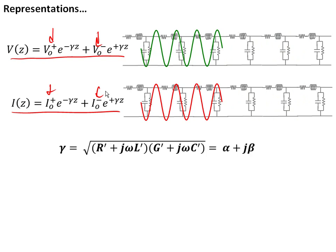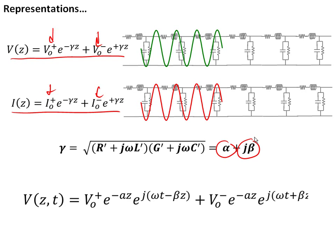And the propagation coefficient is a complex number, it's gamma, and it has a loss alpha and a change of phase we call J beta. So this is all review from our last lecture. And the full expression for how the voltage propagates in space and time is both the positive and the negative going waves with the attenuation and the change in phase.